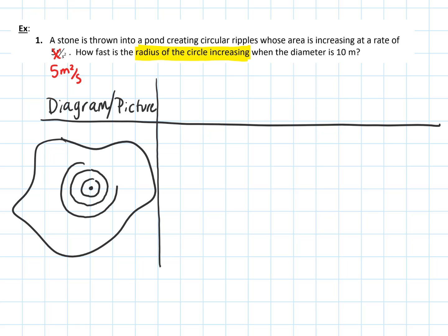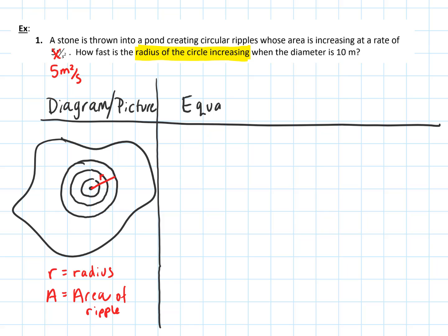We define R as our radius and A as the area of the circular ripple — those are the variables we'll use. Then the second step — I'm doing steps one and two here — is to define the variables and also come up with the equation. What is the relationship or equation between the quantities?